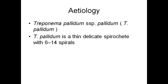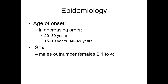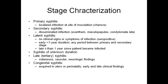Regarding its epidemiology, age of onset in decreasing order: 20 to 39 years of age, then 15 to 19 years, and 40 to 49 years. Males outnumber females. Now regarding stage characterization, there are various stages of syphilis: primary, secondary, latent syphilis, then syphilis of unknown duration, and late — that is tertiary syphilis — and congenital syphilis.